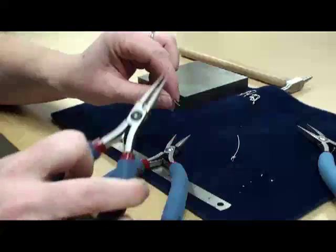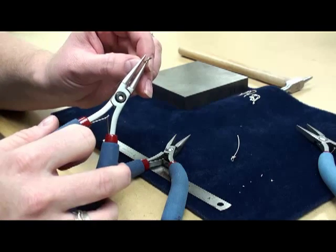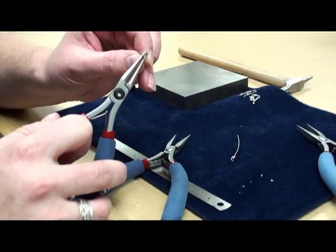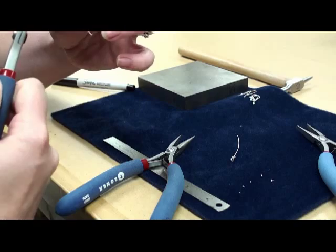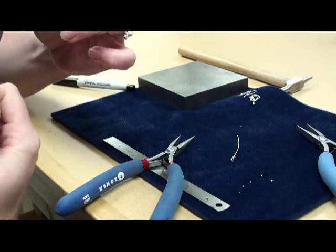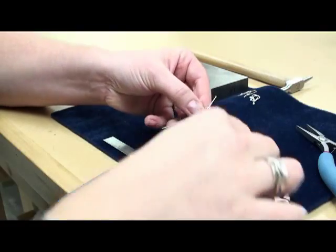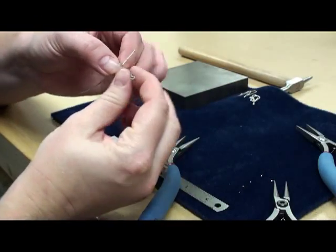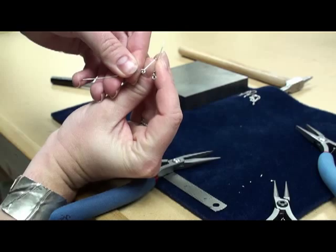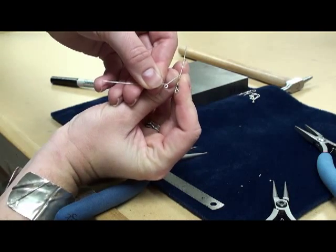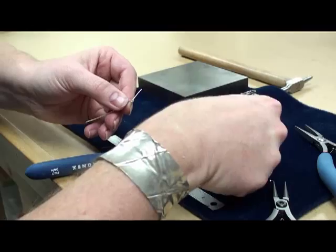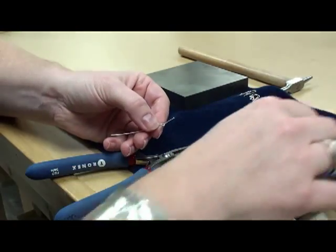So again, I'm going to take, line up my marks on my pliers and my wire. Come back around. Create my little loop here. And you can check to make sure that your circles are matching or your loops so that they're pretty close to the same size. Cause sometimes things can move a little bit.